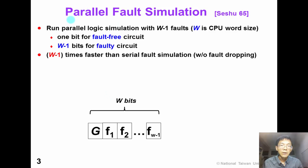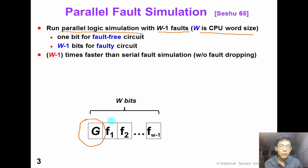Parallel fault simulation runs parallel logic simulation with W-1 faults in a word, where W is the CPU word size. The first bit is reserved for fault-free or good circuit simulation. The other W-1 bits are for faulty circuits. So we can speed up W-1 times compared with traditional serial fault simulation without fault-dropping.